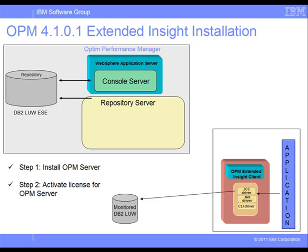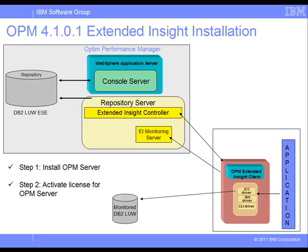This data is then periodically forwarded to the Extended Insight Monitoring Server, which stores it in the repository database. The Extended Insight Monitoring Server is one of three sub-components of the Extended Insight Server component, embedded in the repository server of Optum Performance Manager. There is one Extended Insight Monitoring Server per monitored database for which Extended Insight Monitoring is configured. The other two sub-components are the Extended Insight Controller, a global controller that listens on a port for Extended Insight clients.